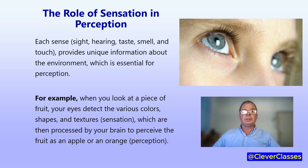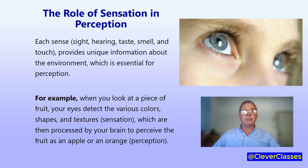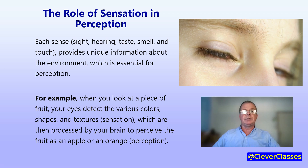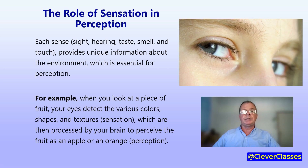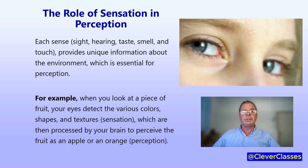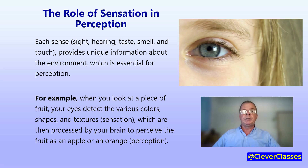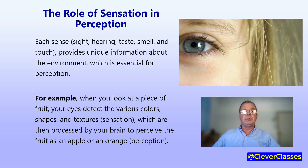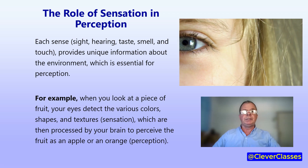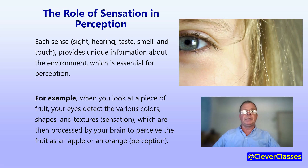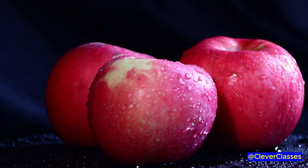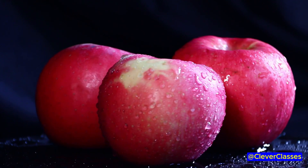For example, when you look at a piece of fruit, your eyes detect the various colours, shapes and textures — the sensations — which are then processed by your brain to perceive the fruit as an apple or an orange.